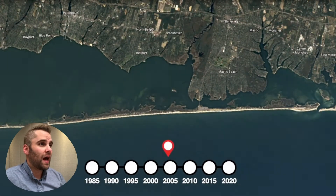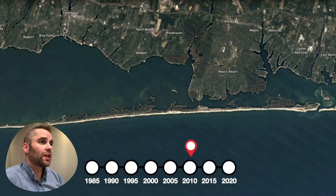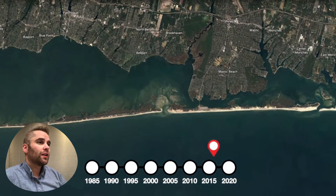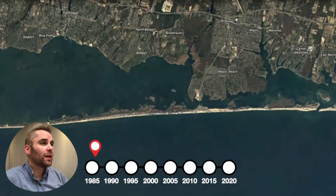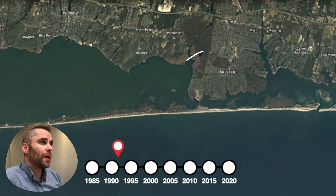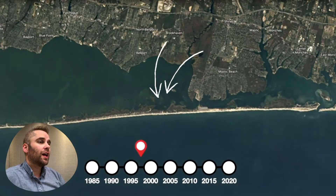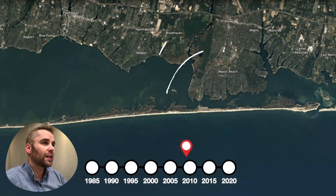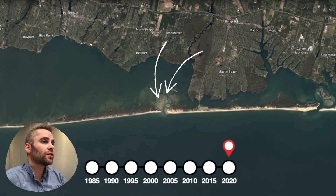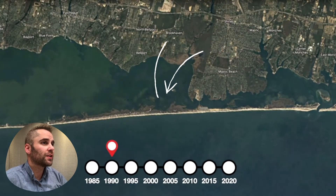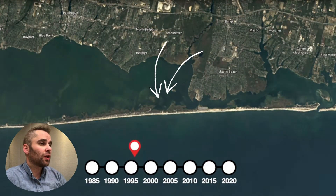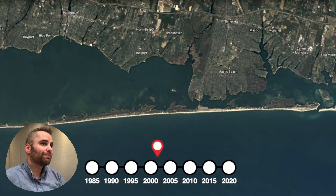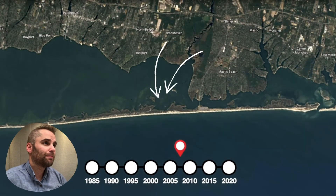Can you guess what happens? Well, let's take a look. The hurricane comes in and punches a hole in that barrier island and creates what we call a washover fan behind it. Really interesting processes in both of these places that share a lot of properties — really cool to see.